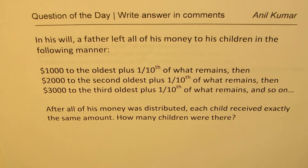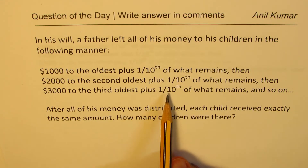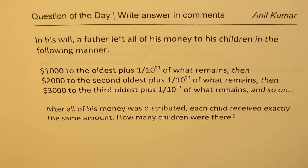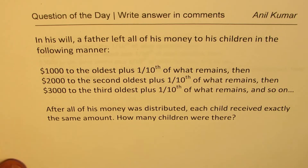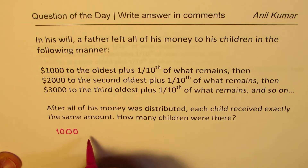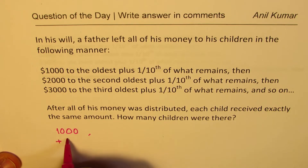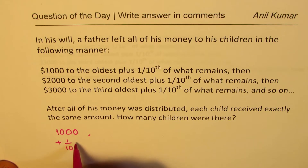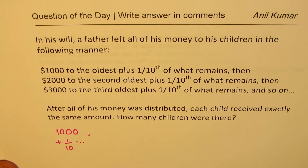What we have to realize is that the last person got the whole amount, right? So what one-tenth of that was? Nothing remained. So the process ends when the remaining amount is zero. In this particular question, you have to think like this: one person gets $1,000 plus one-tenth of some amount. We don't know this amount.